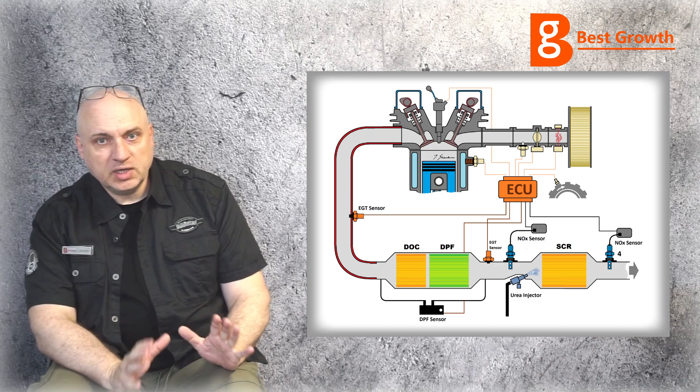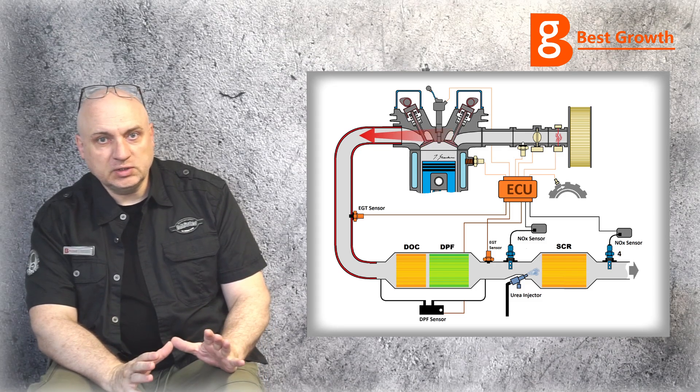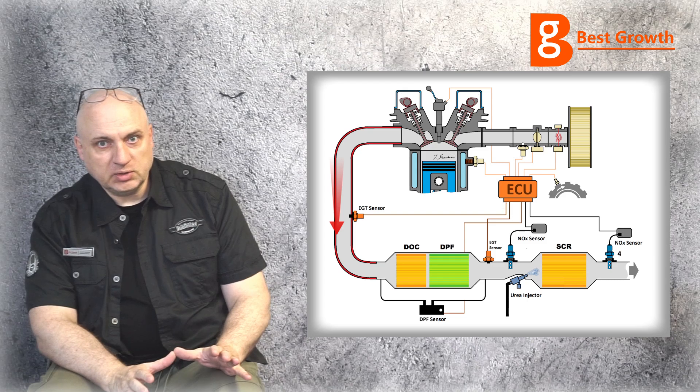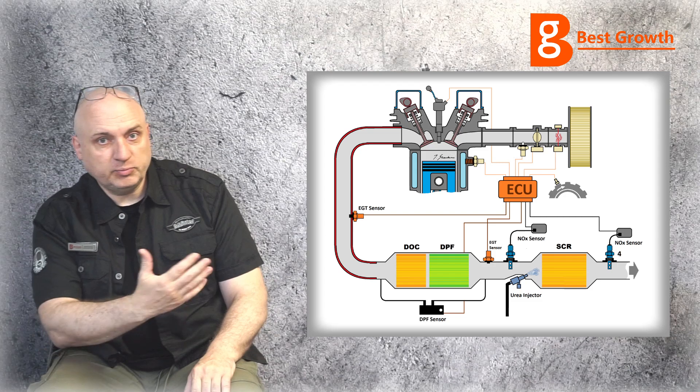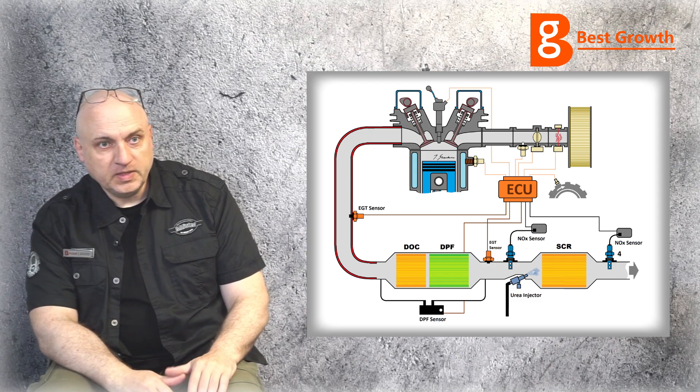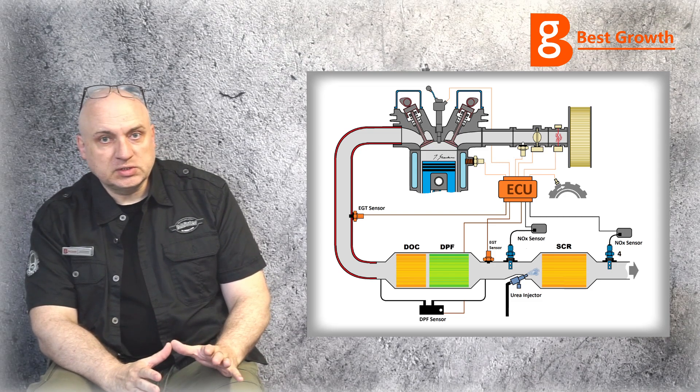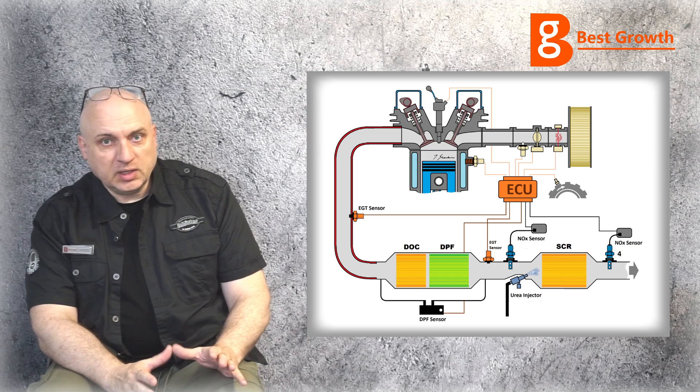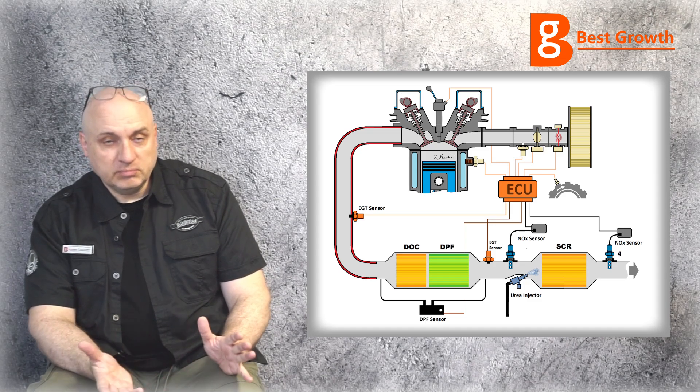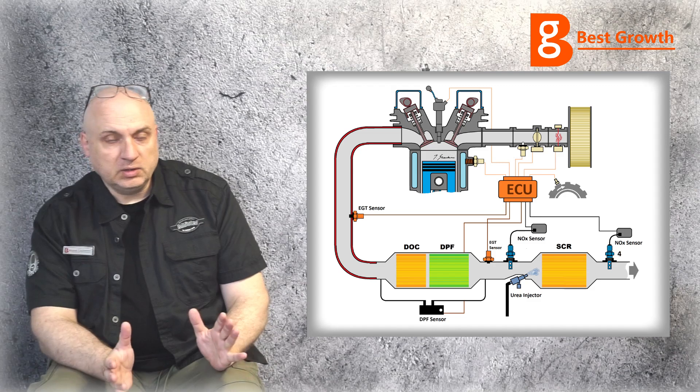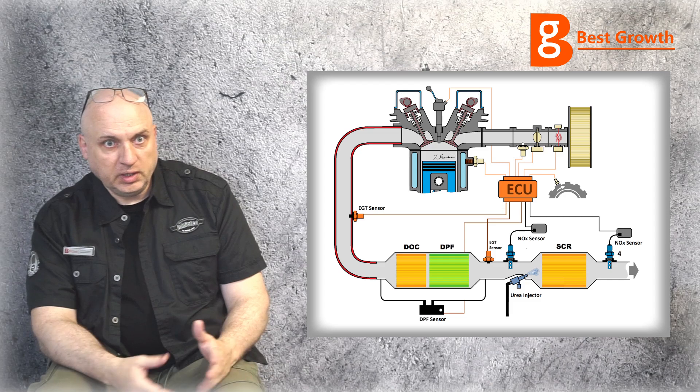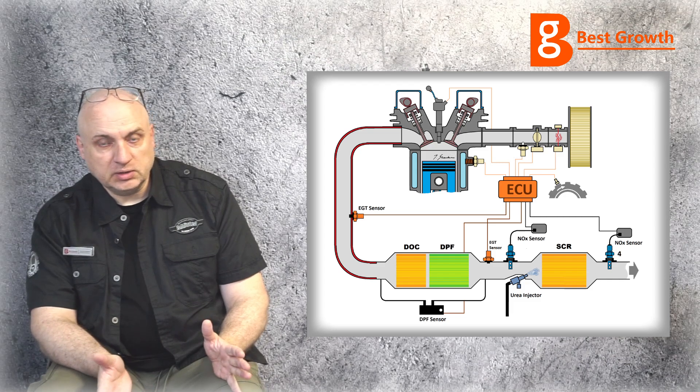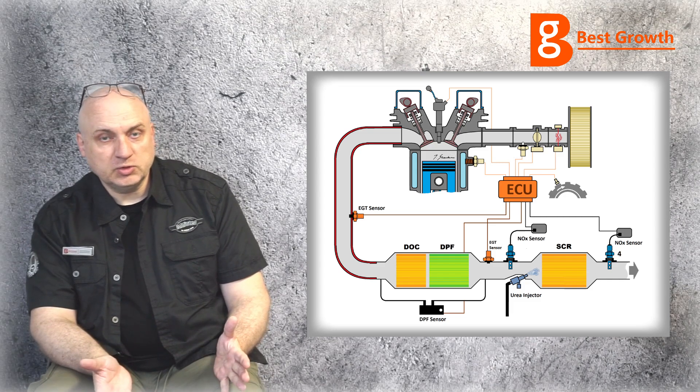The exhaust gases that leave the combustion chamber go straight to DOC. In most cases, this is a very popular system these days. What is DOC? This is diesel oxidating catalyst. So it oxidizes. And here in DOC, unburned hydrocarbons are being burned out, and carbon monoxide is turned to carbon dioxide.